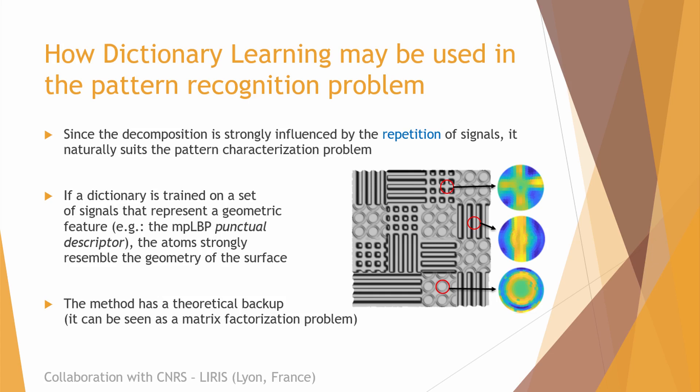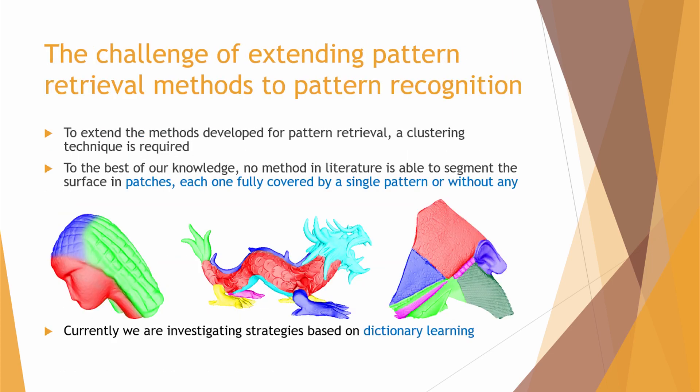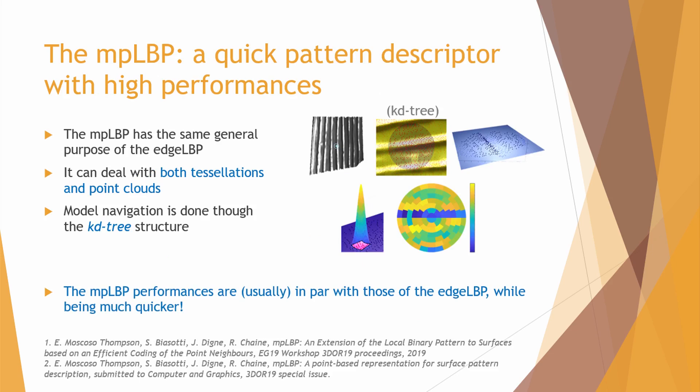Last question: how do you vectorize the mesh? The MPLBP descriptor is what I'm using. I can use either a mesh or point cloud — it doesn't really matter; I use the vertices of a triangulation. A grid creates sectors in each neighborhood of each point. A scalar value is given to each sector, equal to the mean curvature of the points that fell in that sector.